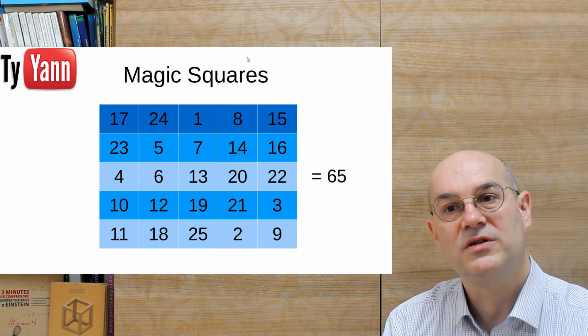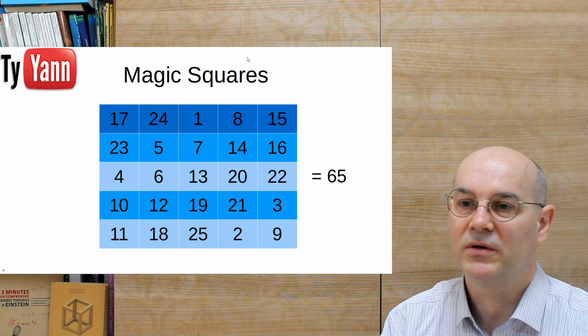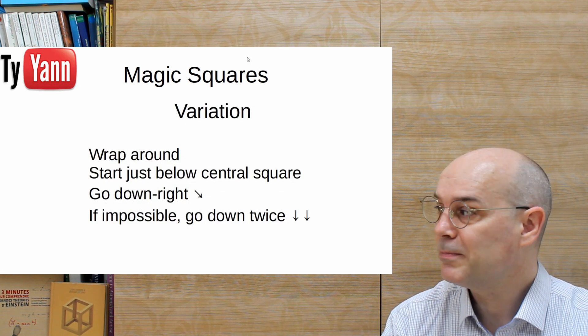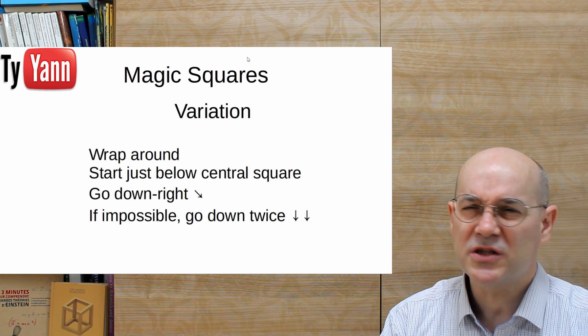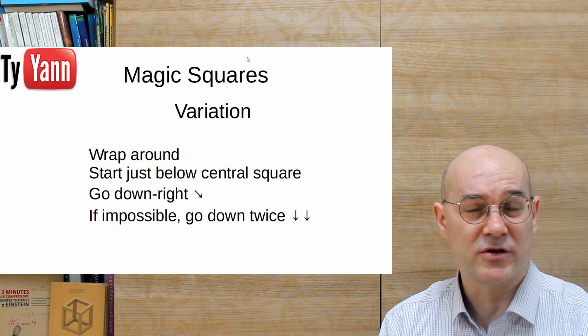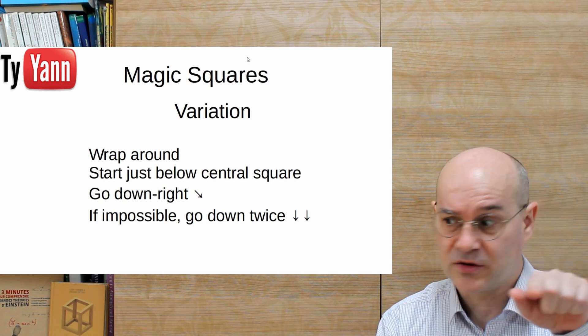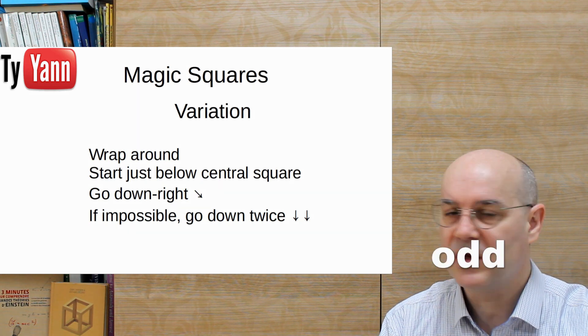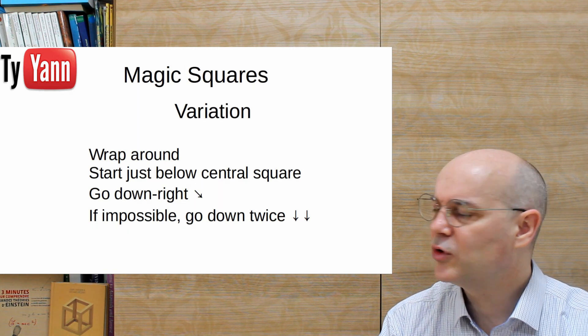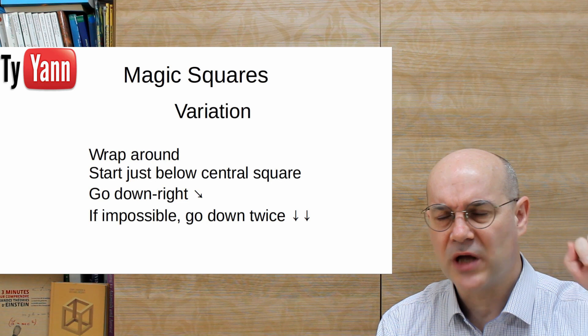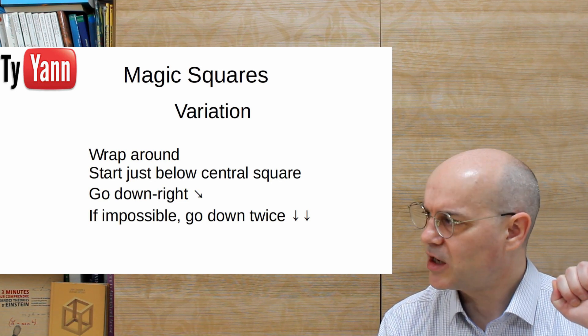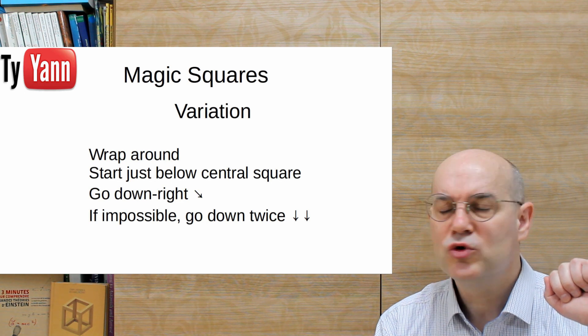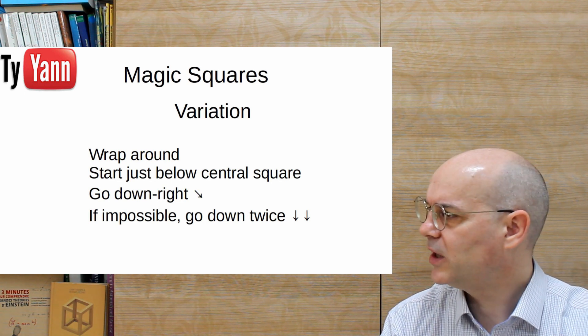There's a variation on this method, which is this one. It's the one I learned when I was a kid. Wrap around again. Start just below the central square. So you have the central square, always there's a central square because we're working with odd numbers. And instead of going upright, you go downright. And if you can't go downright, you go down twice. Let's do this.